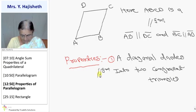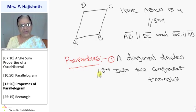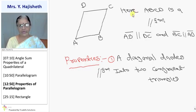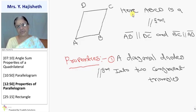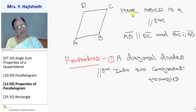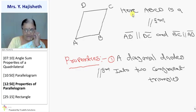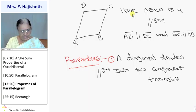To verify this, join diagonal AC. In triangle ABC and triangle CDA: AB = CD (opposite sides), BC = AD (opposite sides), and AC = CA (common). Therefore by SSS rule, triangle ABC is congruent to triangle CDA. Alternatively, using alternate angles and ASA rule gives the same result.